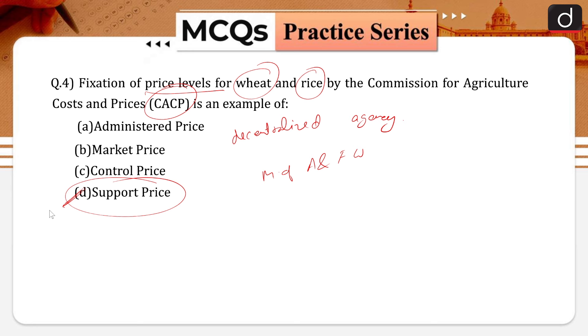It is the support of certain price levels at or above market values by the government. Therefore, option D is correct.